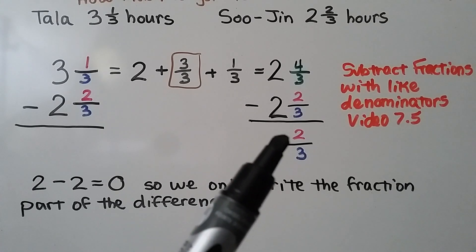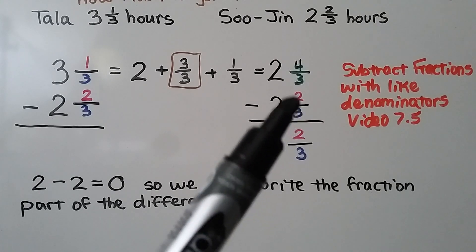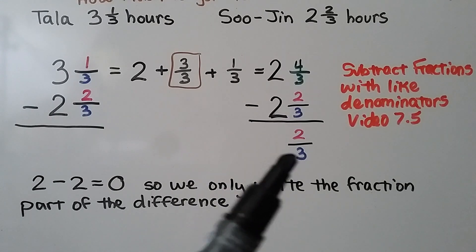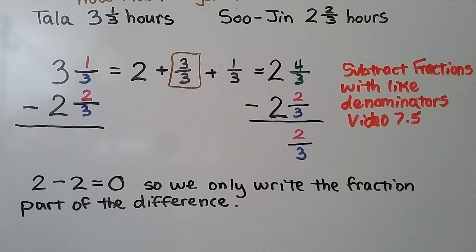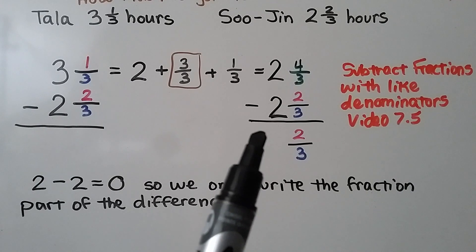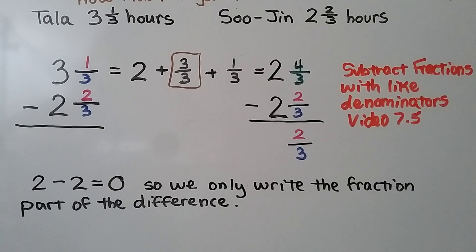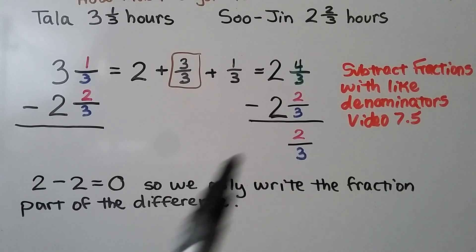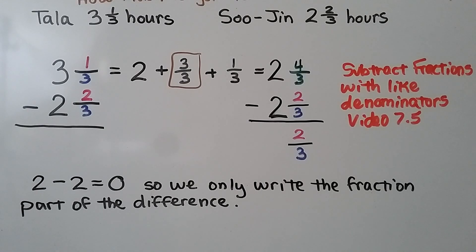Now we can subtract 2 and 2 thirds. 4 minus 2 is 2, and we have a like denominator of 3, so we have 2 thirds. And 2 minus 2 is equal to 0, so we only write the fraction part of the difference. We don't put a 0 here.